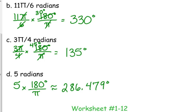Practice this on your worksheets using problems 1 through 12. Notice some of those are negative angles — we haven't talked about negative angles yet, but that just means you stick a negative in front of the radians or in front of the degrees when you convert. We'll talk about what that actually means in a few minutes.